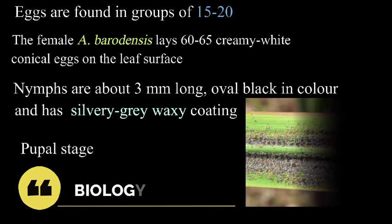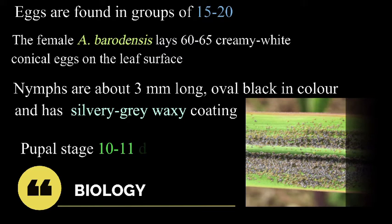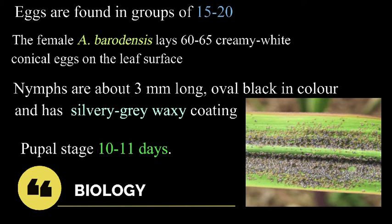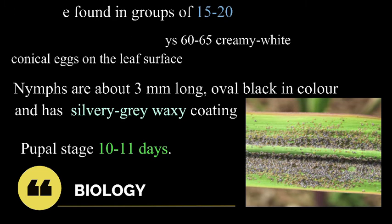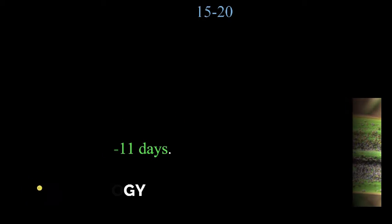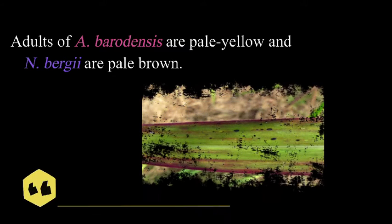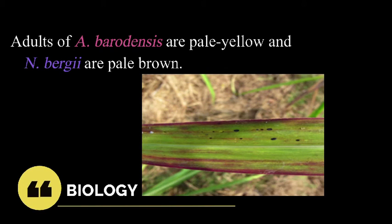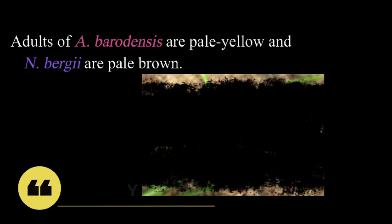Biology: eggs are found in groups of 15 to 20. The female A. barodensis lays 60 to 65 creamy white conical eggs on the leaf surface. Nymphs are about 3 mm long, oval, black in color, and have a silvery gray waxy coating. The pupal stage lasts for about 10 to 11 days. Adults of A. barodensis are pale yellow in color and N. bergii are pale brown in color.